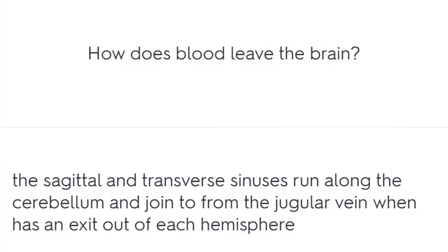How does blood leave the brain? The sagittal and transverse sinuses run along the cerebellum and join to form the jugular vein, which has an exit out of each hemisphere.